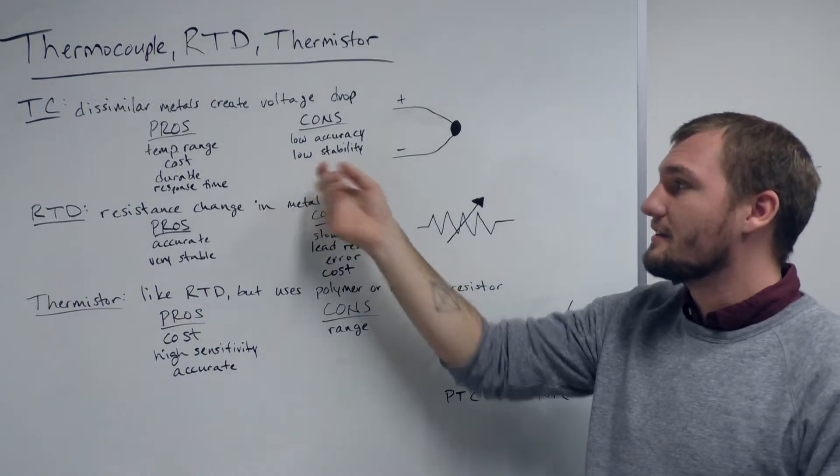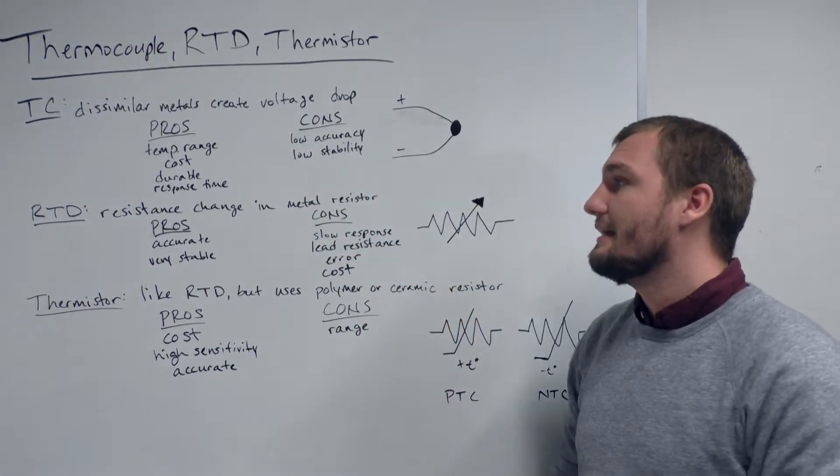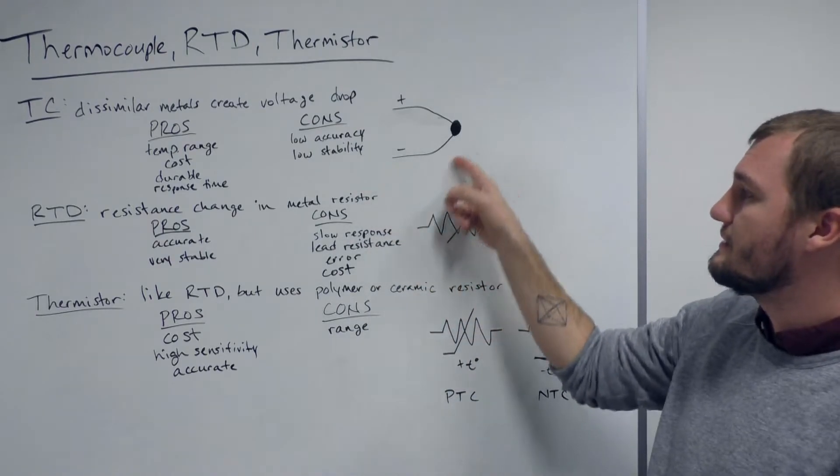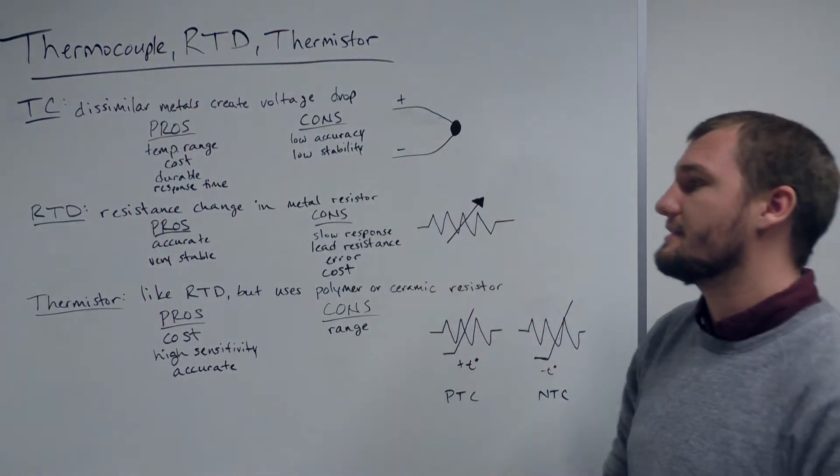Some of the cons are that they tend to be very low accuracy and they tend to have low stability. Typically, if you see this symbol in a circuit diagram, that indicates a thermocouple.